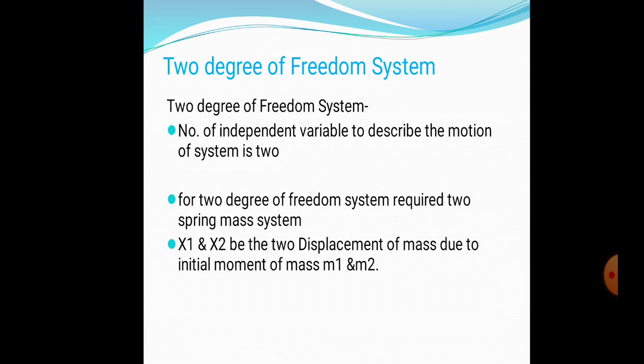The two degree of freedom system: degree of freedom is the number of independent variables to describe the motion of the system, and that is two. For a two degree of freedom system we require two parameters in terms of displacement, X1 and X2, with masses M1 and M2.